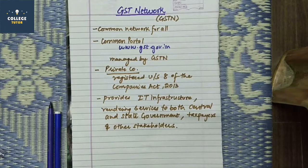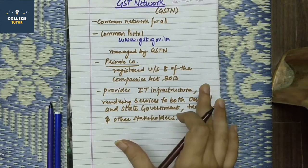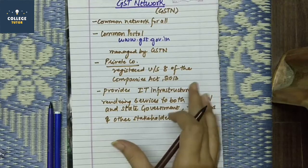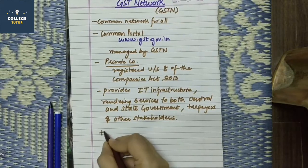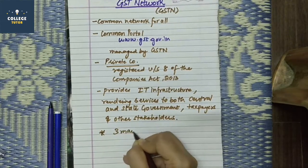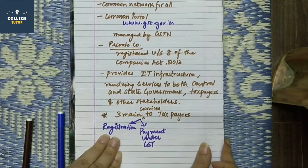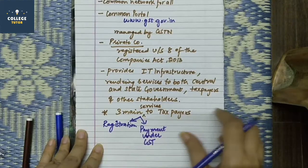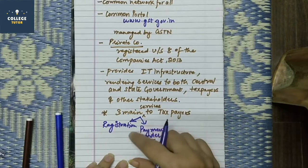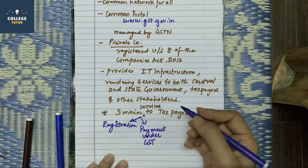GSTN's network provides three main services to taxpayers. The first main service is registration. If you want to register as a taxpayer, you can register through this portal.